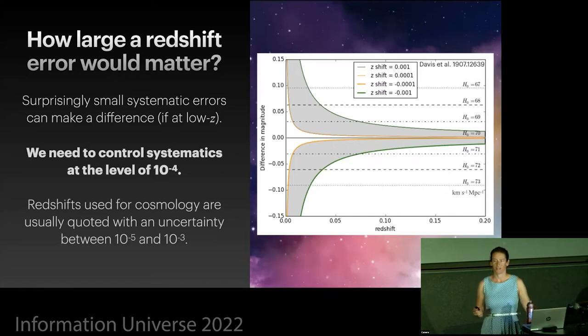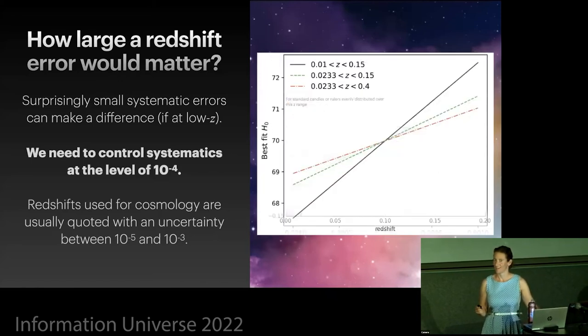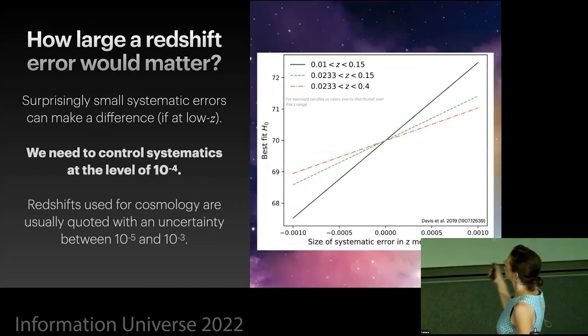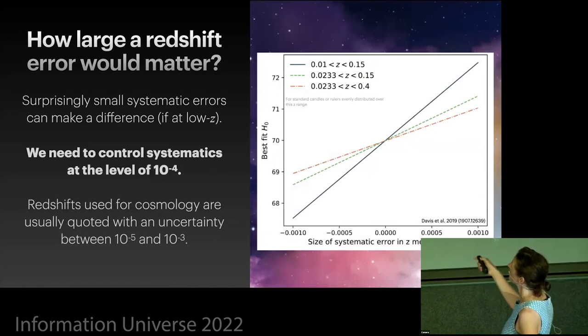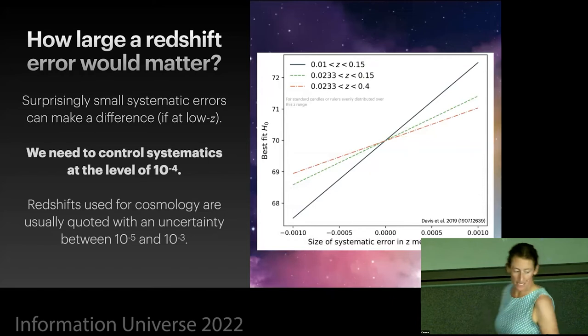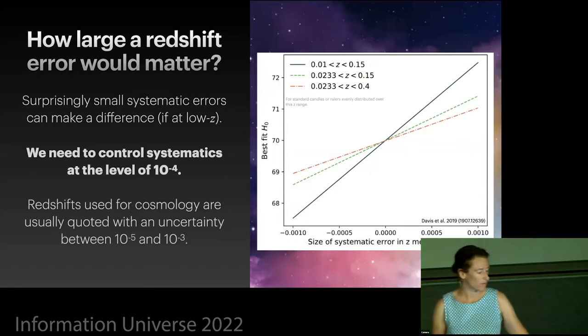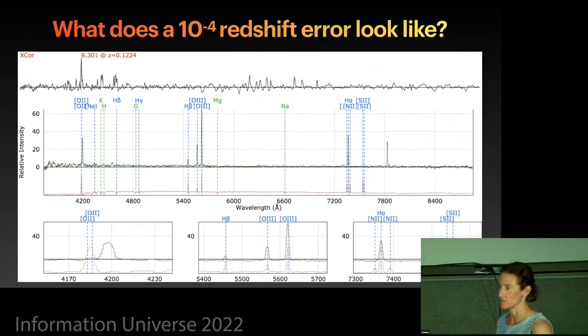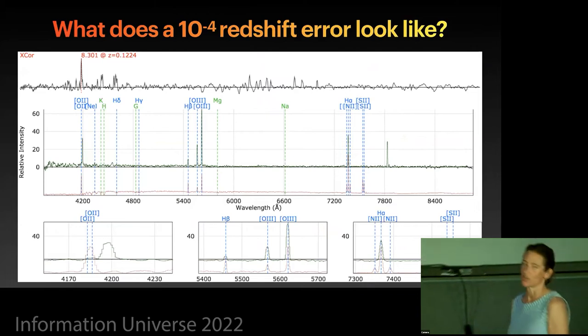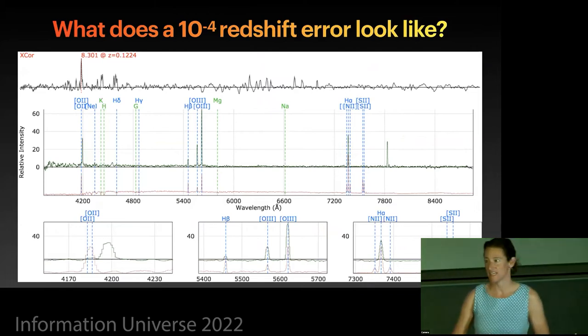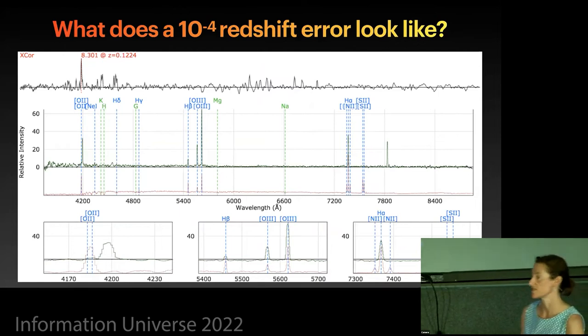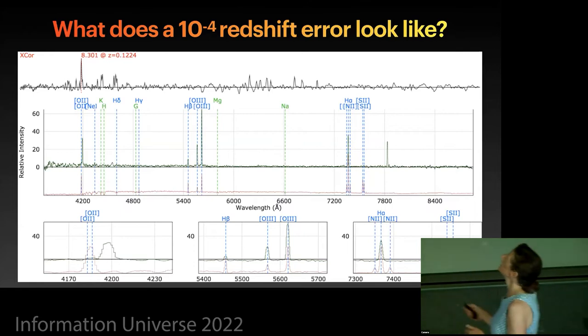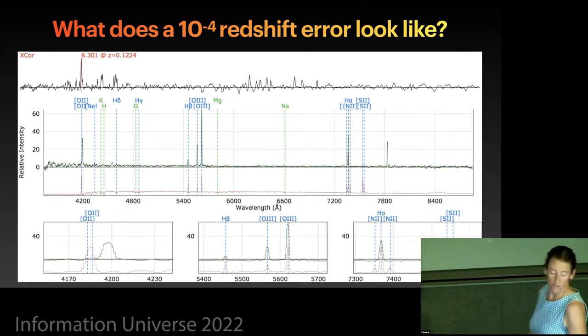Does anyone have any questions at this point? If not, so this is just another plot of the same thing. What size of systematic error in redshift would give you a shift in H naught? So yeah, as I said, about a 10 to the minus 3 would get rid of the tension. Is a 10 to the minus 3 shift plausible? That's what I'm about to talk about. So firstly, as I said, a 10 to the minus 4 shift would cause a systematic error that we care about, given the size of our error bars at the moment. And this is what a 10 to the minus 4 redshift shift would look like.